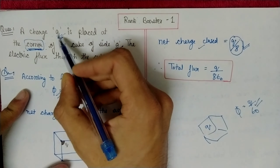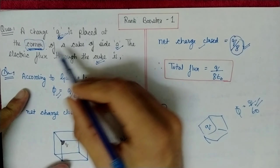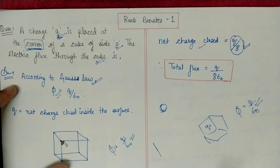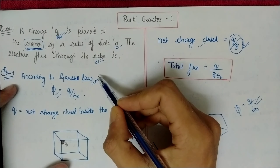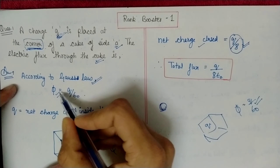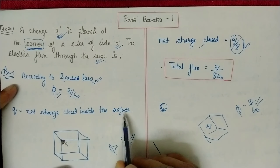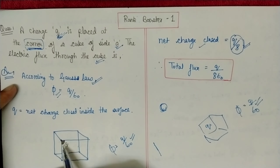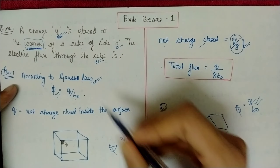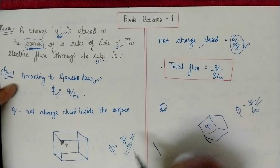In this question, a charge Q is placed at the corner of a cube. When we study this for the first time, the formula for electric flux is φ = Q/ε₀, where Q represents the net charge enclosed. So the simple answer would be Q/ε₀.